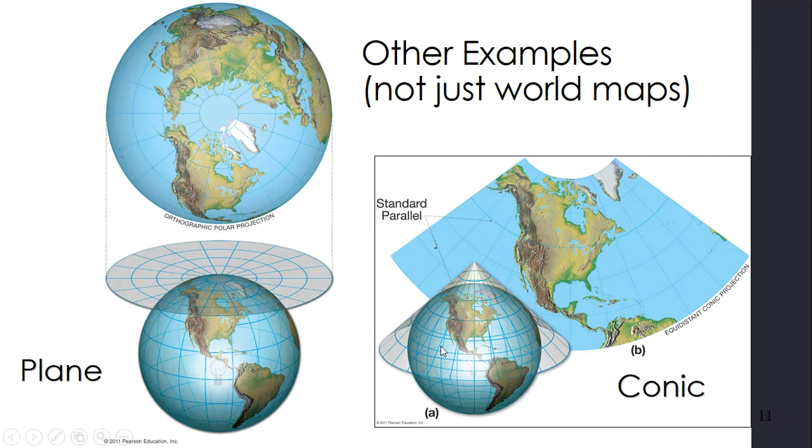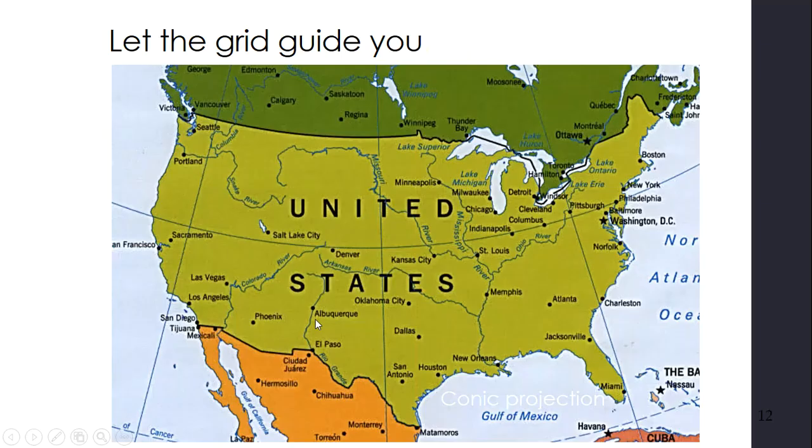This is a conic projection. So imagine you wrapped paper around it and pulled it like this. If you look at the lines here, again, the parallels of latitude, you can see which way distortion is happening. They're not going straight across. So let that grid guide you. We can know how this is distorted based upon the fact that this is curved in this way. A Mercator projection has those parallels going straight across.